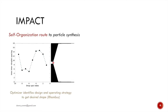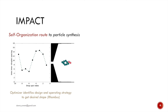Now that we have computationally simple models, it is possible to solve some of the inverse problems that we are interested in by incorporating these models inside our optimization algorithms. Here is an example where the optimizer identifies the design and operation needed to get droplets to form a particular shape — a rhombus in this case.